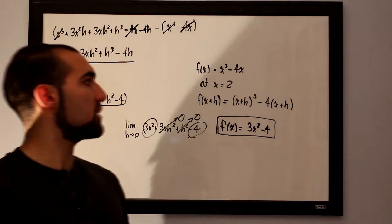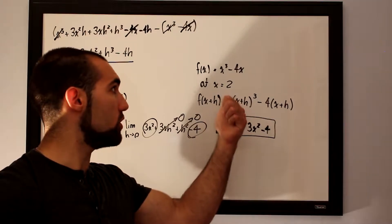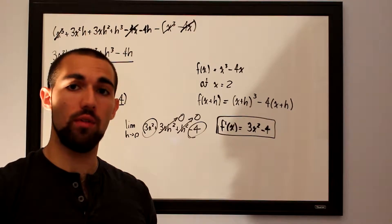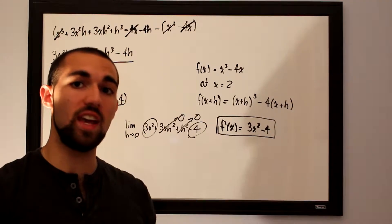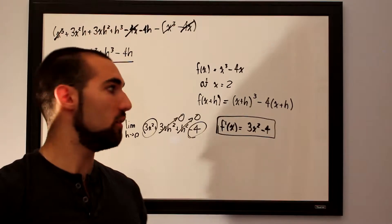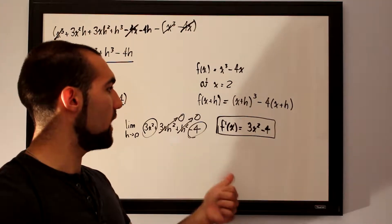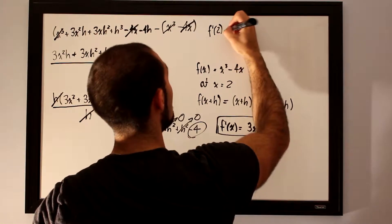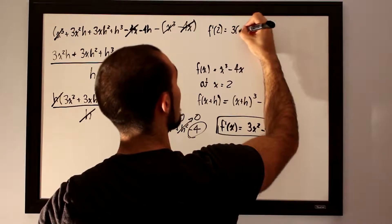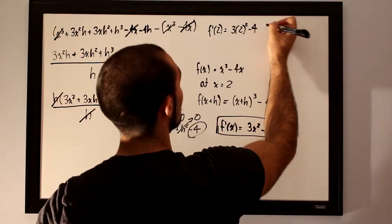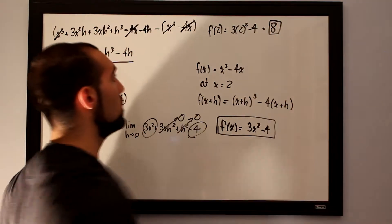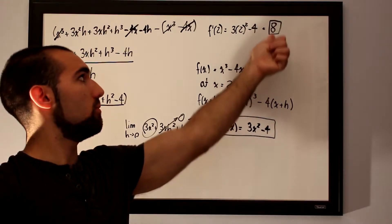The question asks us to evaluate the slope at x equals 2. Now that we have the derivative, all we need to do is plug in x equals 2 into the derivative. So f prime of 2 equals 3 times 2 squared minus 4, which comes to 12 minus 4. The slope at x equals 2 for this function is 8.